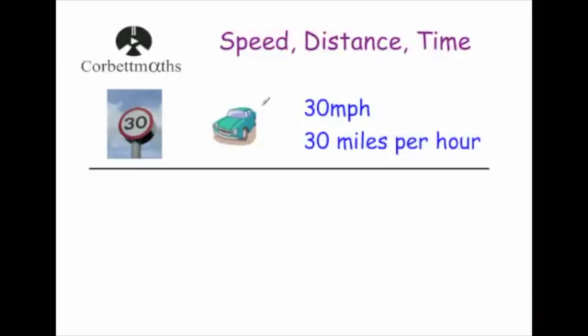In this video we're going to look at speed, distance and time, and some problems involving these. Here we've got a car traveling through a speed limit of 30 miles per hour. If the car is traveling at 30 mph, that means in every hour it drives 30 miles. So in one hour it would drive 30 miles, 2 hours 60 miles, 3 hours 90 miles, 4 hours 120 miles, and so on. A speed is a measurement of how far you travel in a certain amount of time.